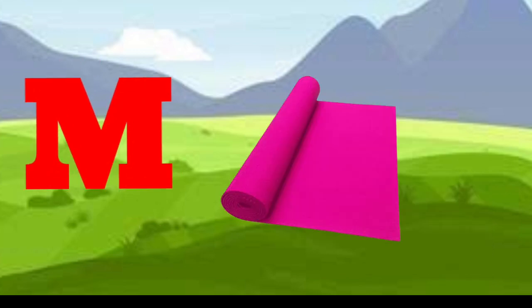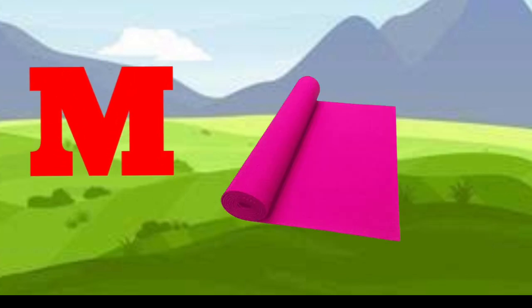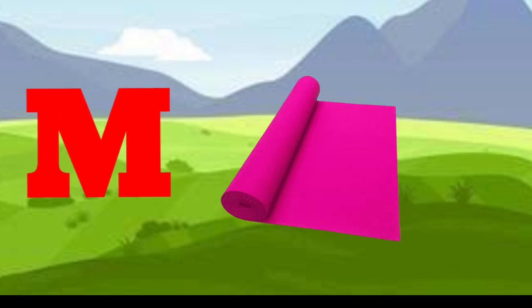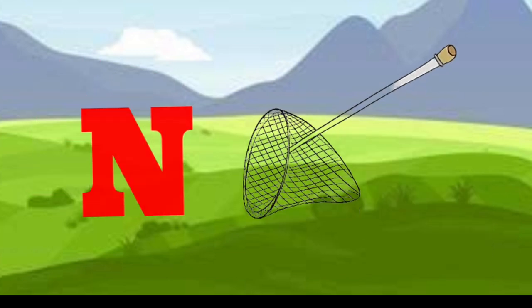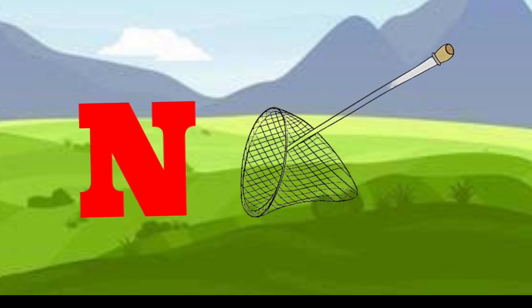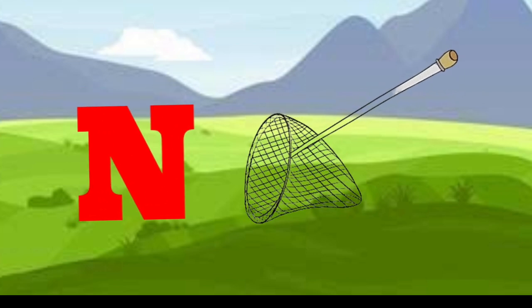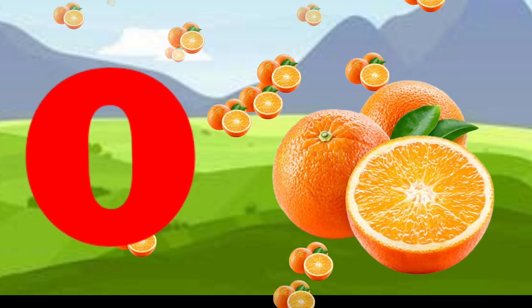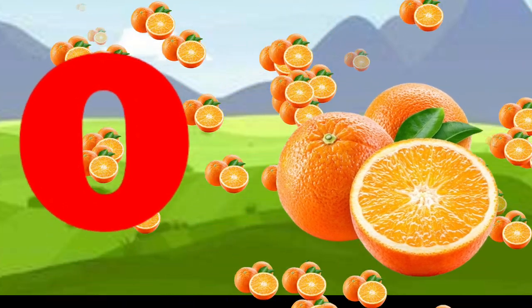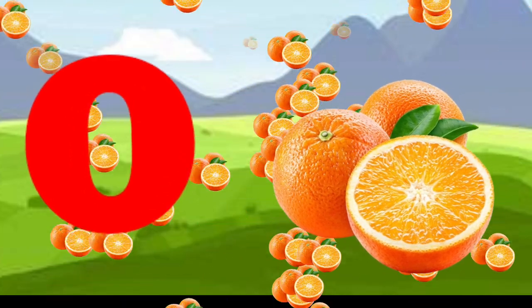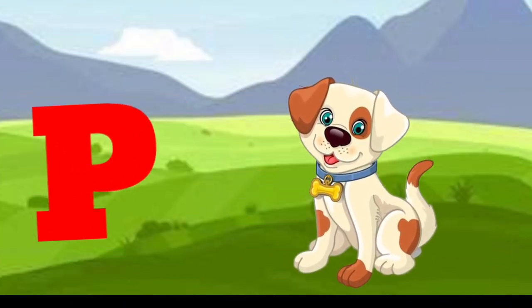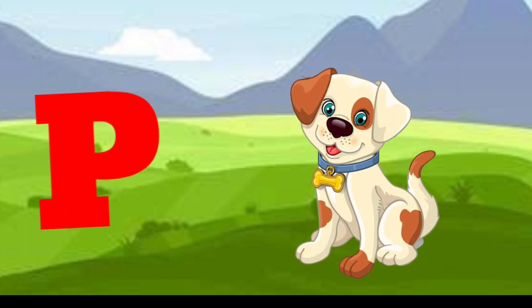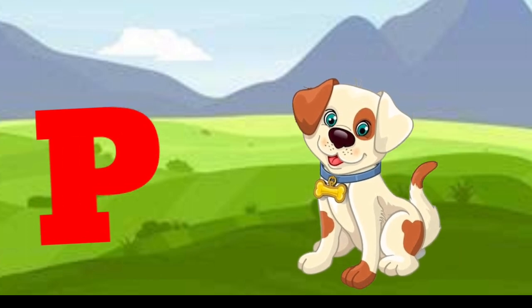M is for mat, m-m-mat. N is for net, n-n-net. O is for orange, o-o-orange. P is for pet, p-p-pet.